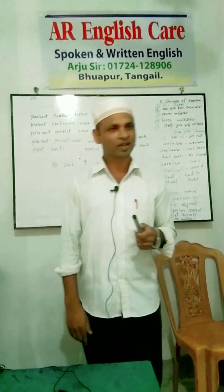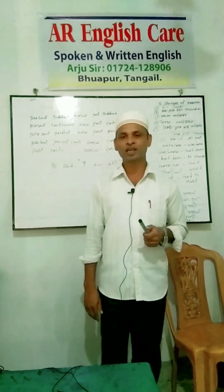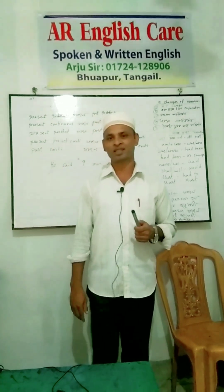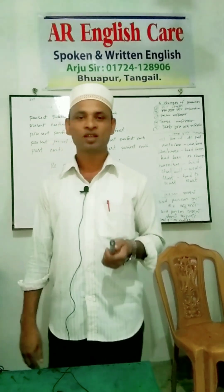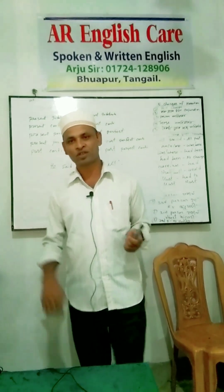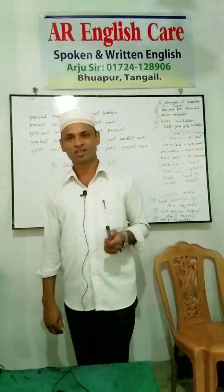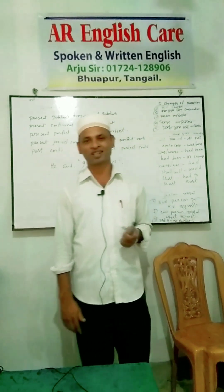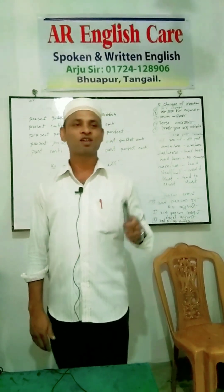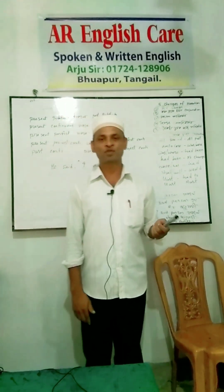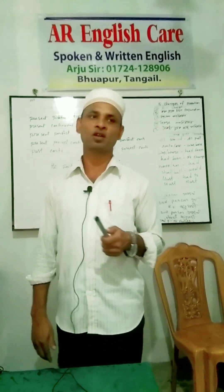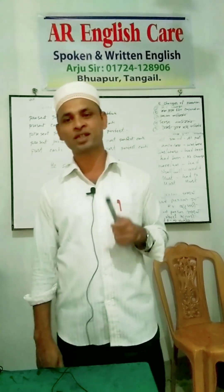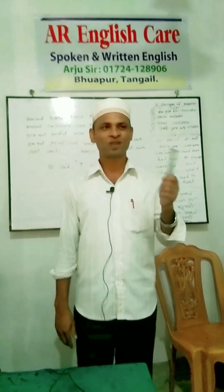Next, 'pot' — normally we say 'pot,' but you have to say 'pot.' 'There is a pot on the table.' We say 'table,' but the correct pronunciation is 'table.' Similarly, 'person' — we say 'person,' but the correct pronunciation is 'person.' What is the correct pronunciation of 'person'? 'Person.'